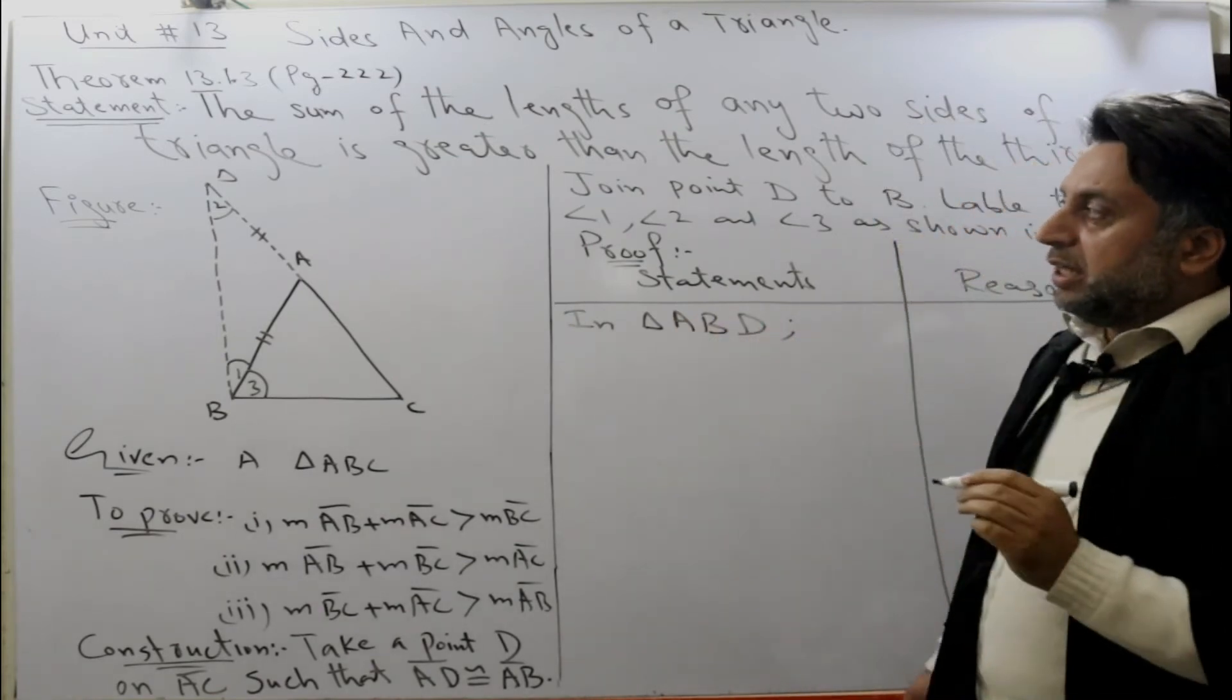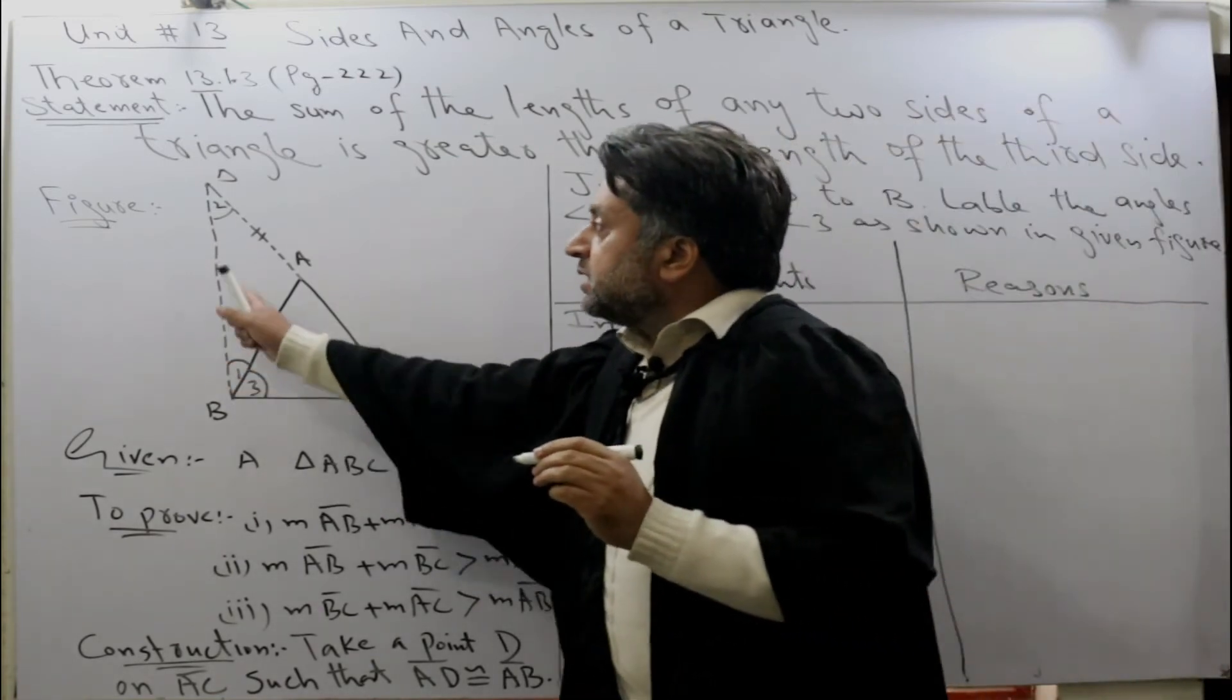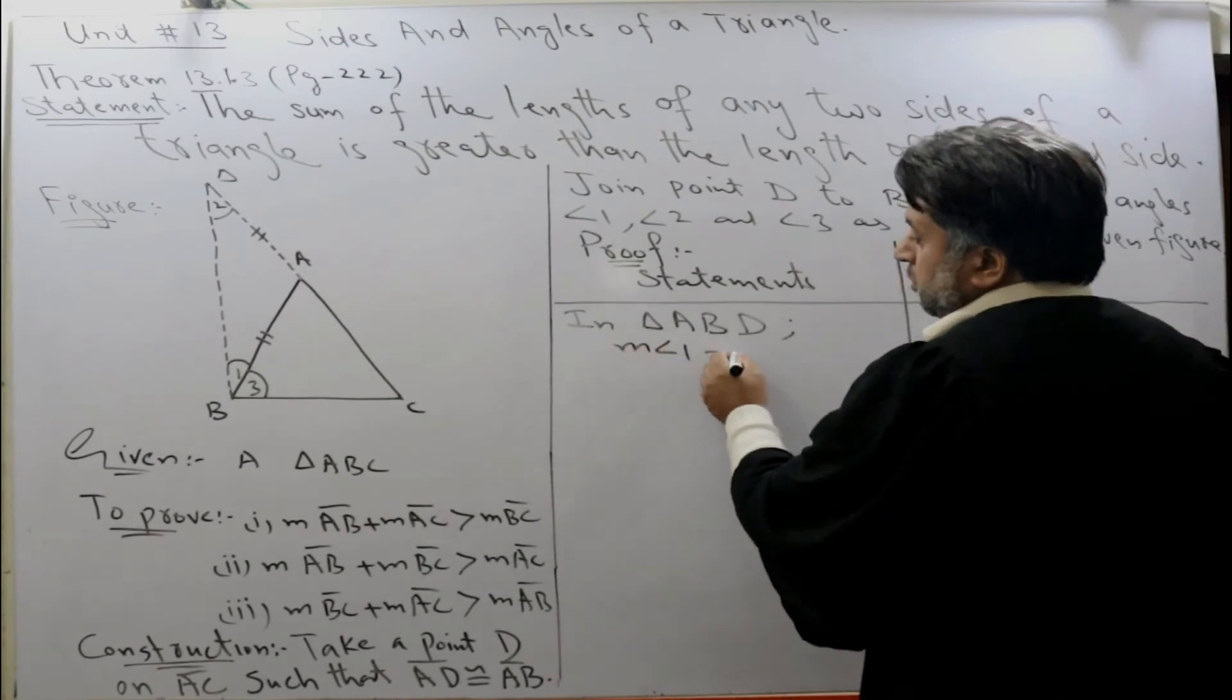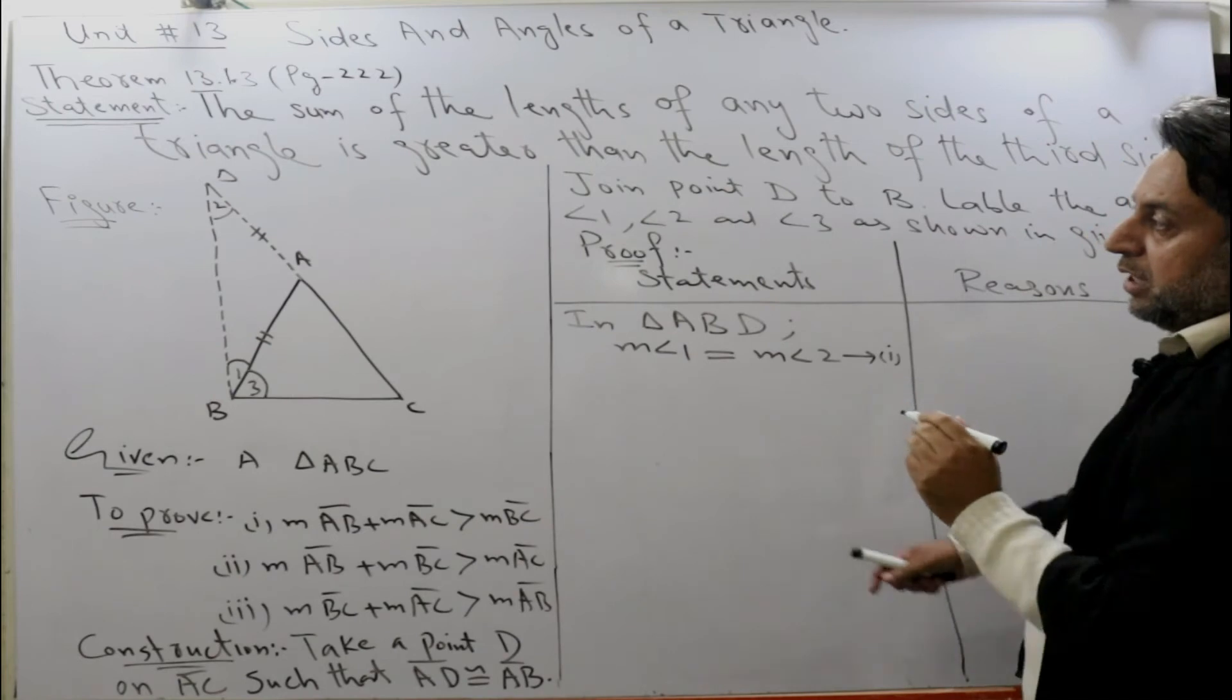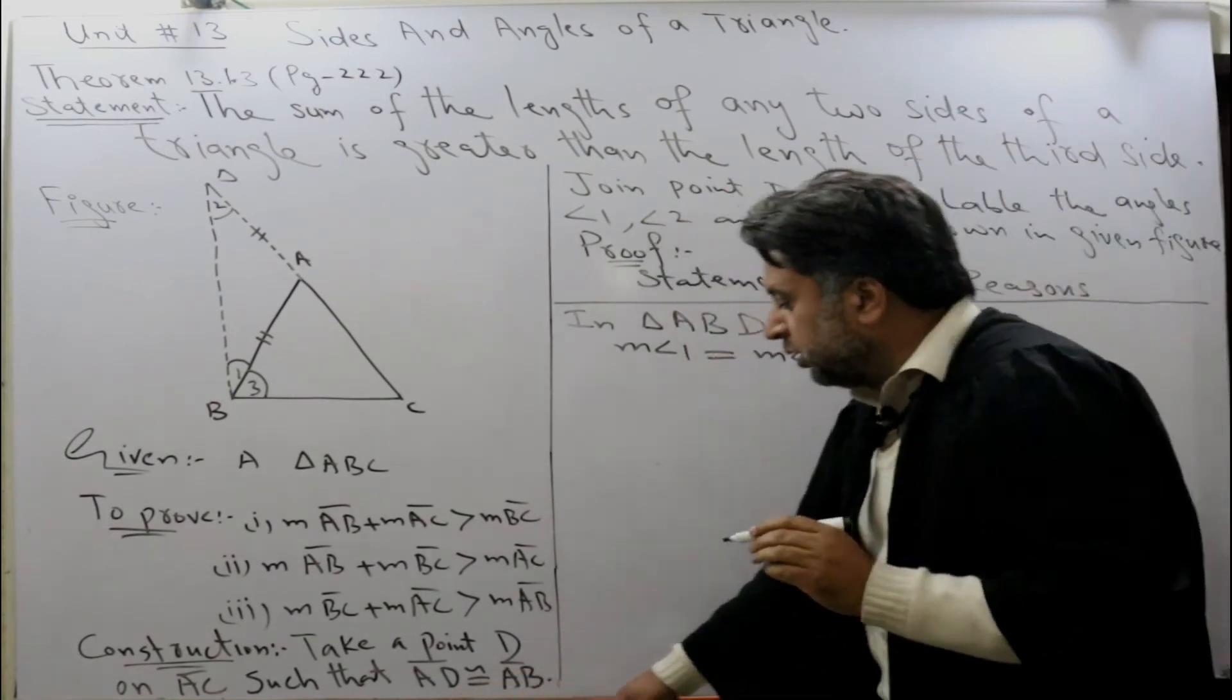Now in triangle ABD, angle 1 is equal to angle 2. The reason is that AD is congruent to AB.